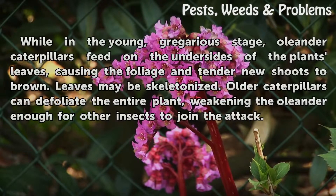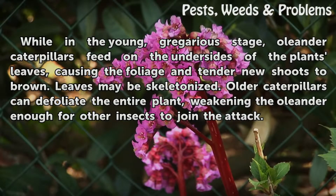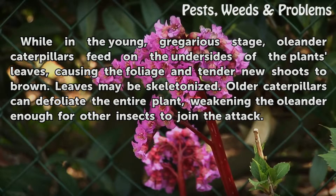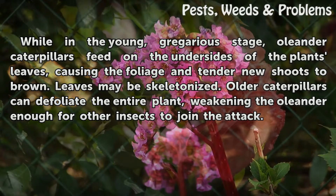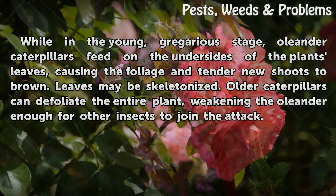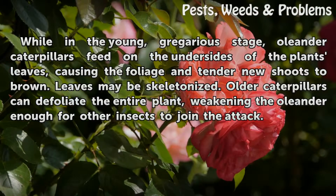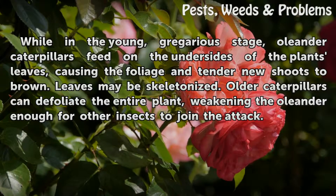Damage. While in the young, gregarious stage, Oleander caterpillars feed on the undersides of the plant's leaves, causing the foliage and tender new shoots to brown. Leaves may be skeletonized. Older caterpillars can defoliate the entire plant.